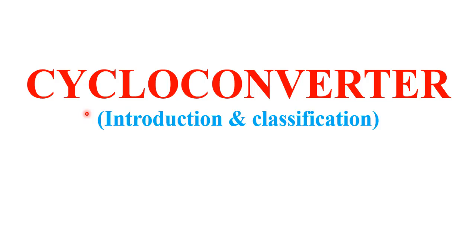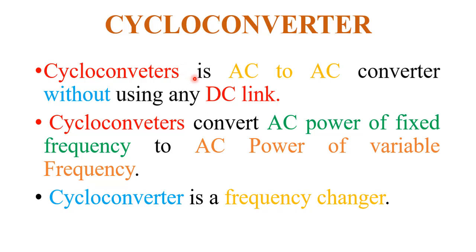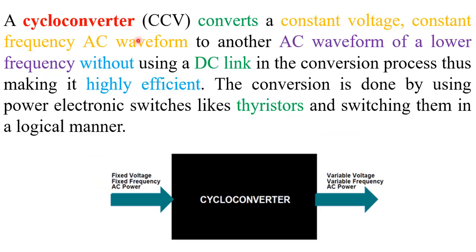Hello friends, welcome to Quick Learn Tutorial Series. In this video I will explain cycloconverter — its introduction and classification. A cycloconverter is basically an AC to AC converter without using any DC link. It converts AC power of fixed frequency to AC power of variable frequency, hence it is basically a frequency changer. The standard definition: a cycloconverter converts a constant voltage, constant frequency AC waveform to another AC waveform of lower frequency without using a DC link in the conversion process, thus making it highly efficient.